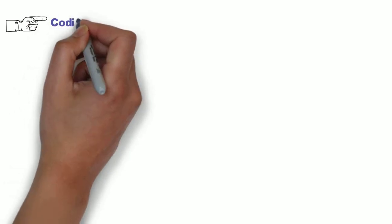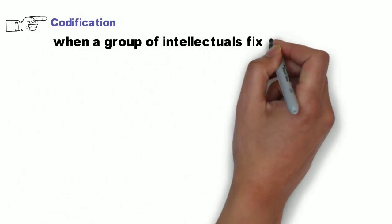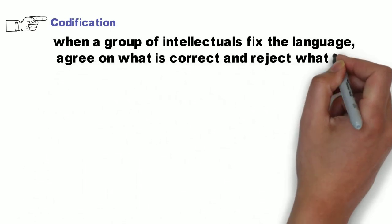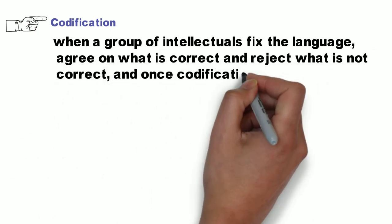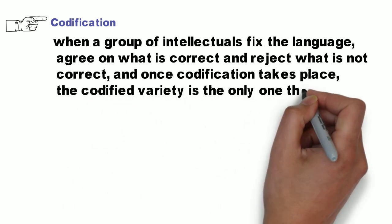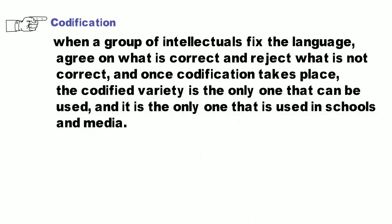The second step is codification. Codification is when a group of intellectuals fix the language, agree on what is correct and reject what is not correct. Once codification takes place, the codified variety is the only one that can be used, and it is the only one used in schools and media.